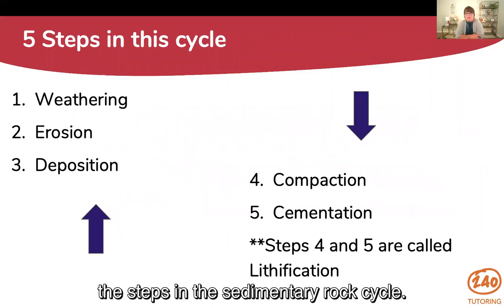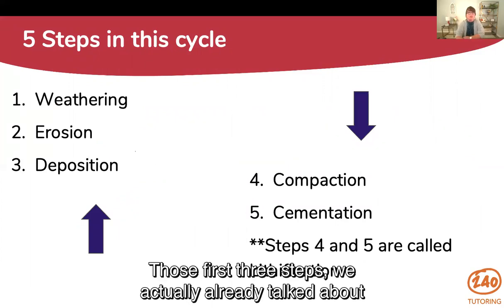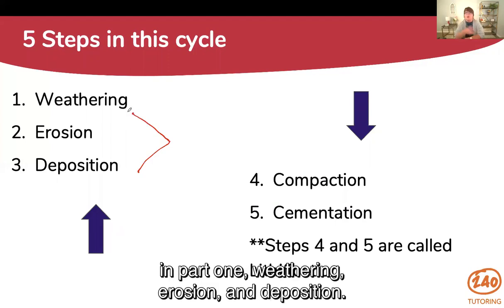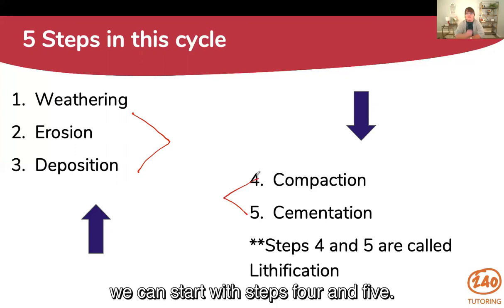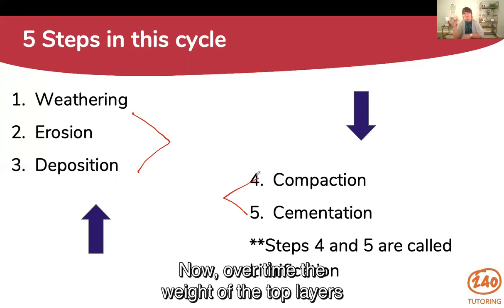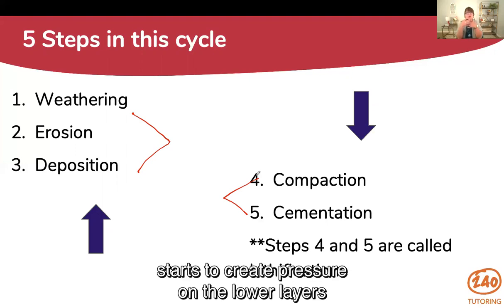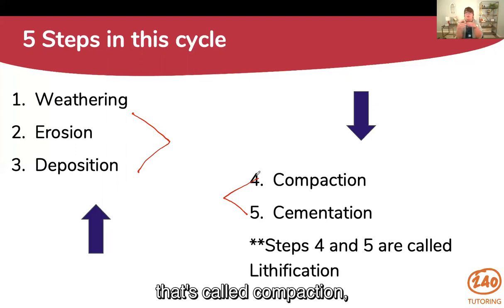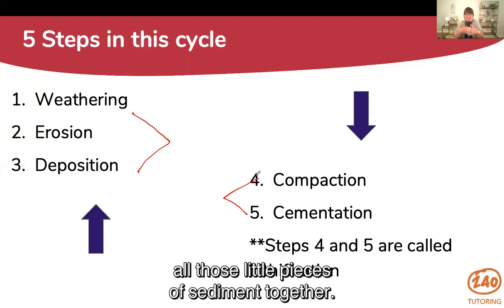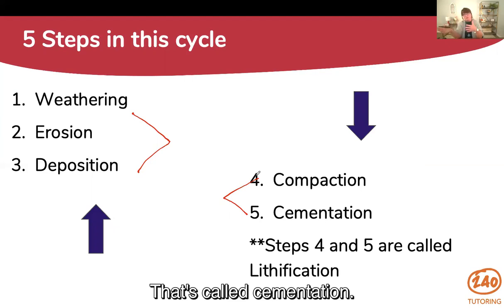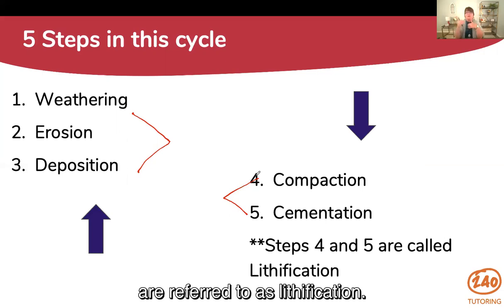The steps in the sedimentary rock cycle — the first three steps, weathering, erosion, and deposition, we already talked about in part one. Now once those sediments are deposited we move to steps four and five. Over time, the weight of the top layers starts to create pressure on the lower layers — that's called compaction, as they get closer and closer together. That pressure over time starts to cement all those little pieces of sediment together — that's called cementation. Those two steps together, compaction and cementation, are referred to as lithification.